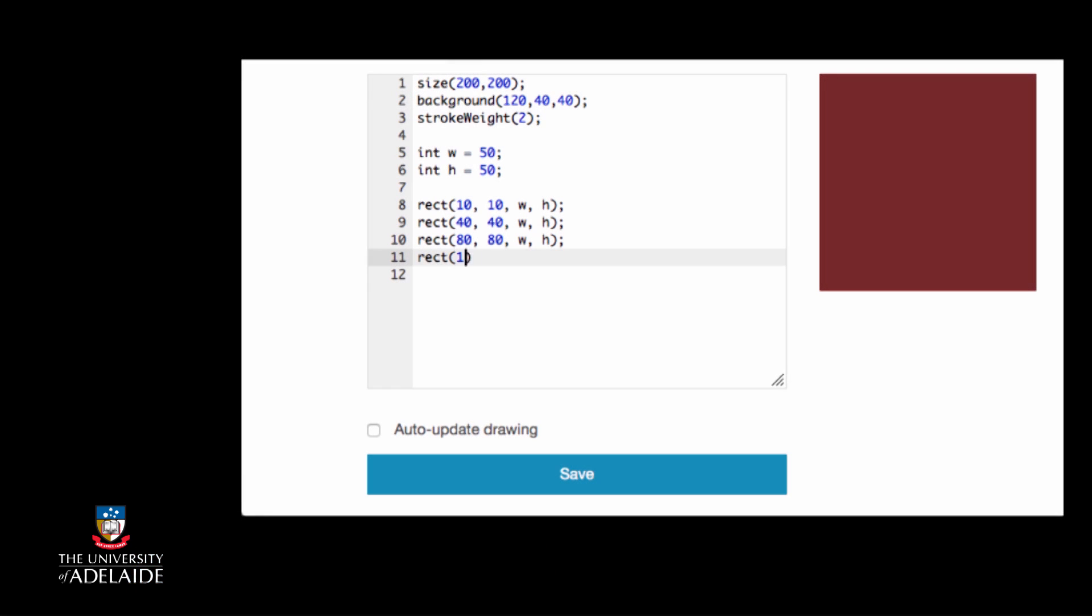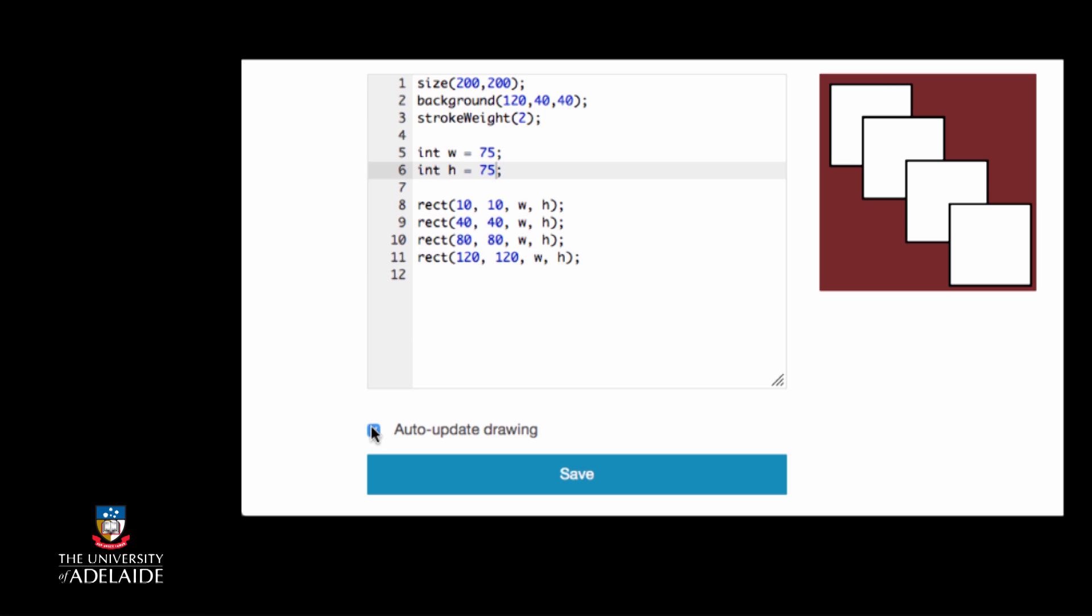If we wanted to make all of the shapes 50% bigger in our program, it would be a lot easier if we could simply change a small number of variables, rather than having to change every value used in every function called to create a shape.